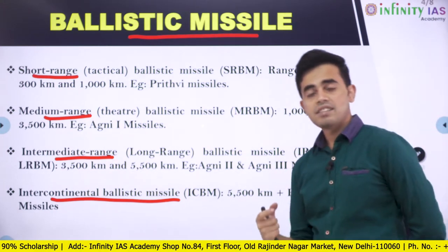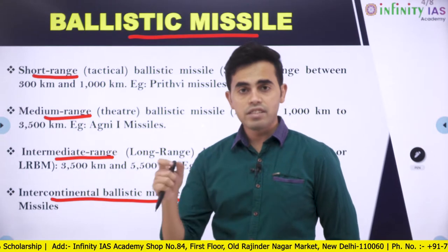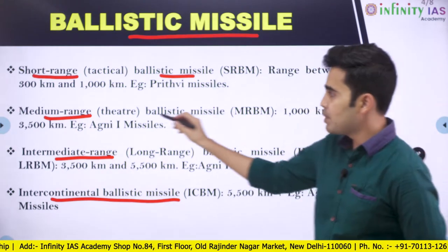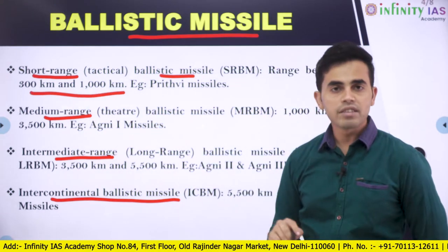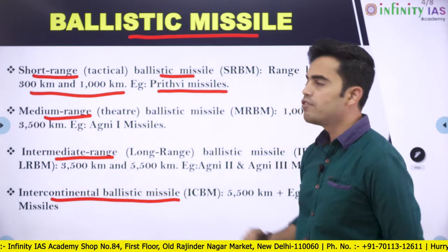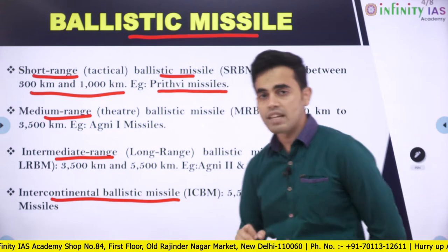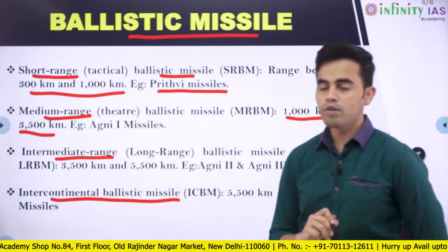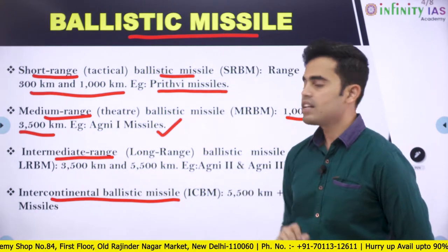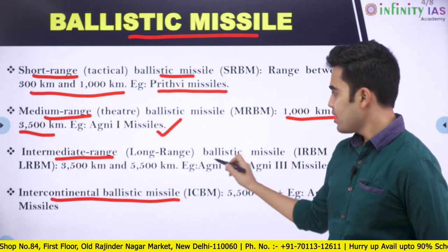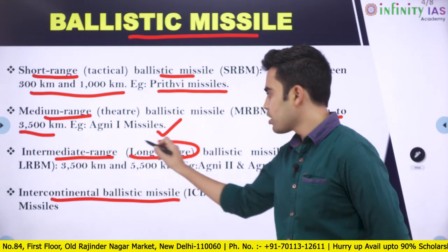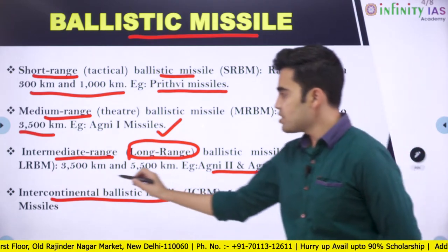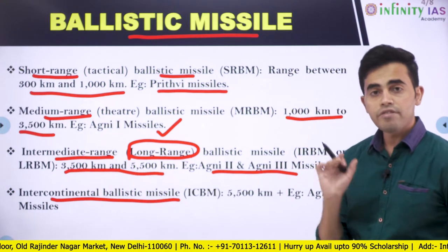The types of ballistic missiles are divided based on the range to which a ballistic missile can be fired. Short-range ballistic missiles range between 300 km and 1000 km — for example, we have Prithvi missiles. Medium-range is between 1000 km to 3500 km — we have Agni-1 missiles in this range. Intermediate-range or long-range is 3500 to 5500 km — we have Agni-2 and Agni-3 missiles.